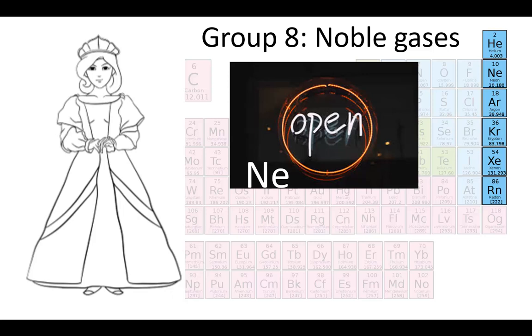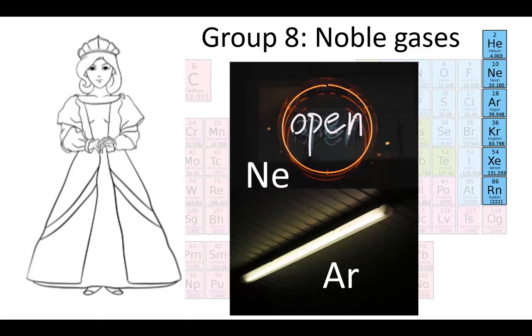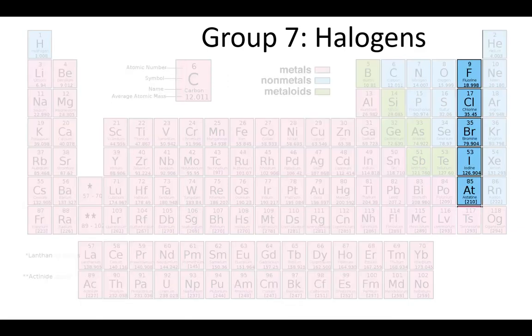Neon used to be used a lot in lights to make signs. Noble gases, mainly argon, may still be used in fluorescent light tubes. The group next to the noble gases is the halogens.